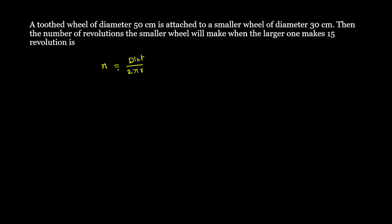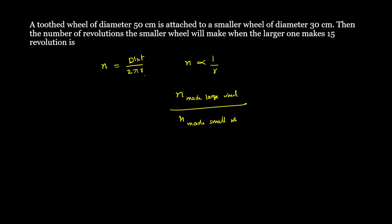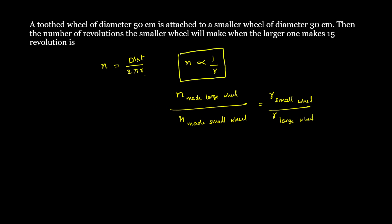Since r is in the denominator, the number of rotations is inversely proportional to r. So the number of rotations made by the large wheel divided by the number of rotations made by the small wheel equals the radius of the small wheel divided by the radius of the large wheel: n1/n2 = r2/r1.